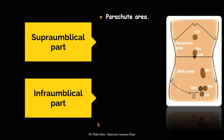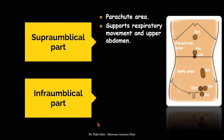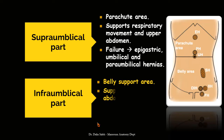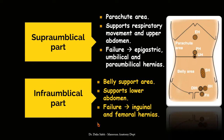Above the umbilicus it is called the parachute area, because the triple crisscross arrangement of muscle fibers and aponeuroses allows distension of the upper abdomen to support respiratory movement. Failure of support in this region results in hernias such as epigastric hernia, umbilical, and para-umbilical hernias. Below the umbilicus it is called the belly support area, where the main function is to support the lower abdomen. Failure in this region results in direct or indirect inguinal hernias, femoral hernia, and spigelian hernia.